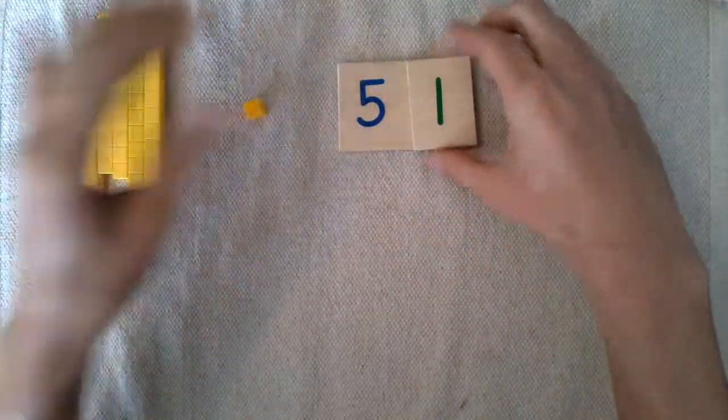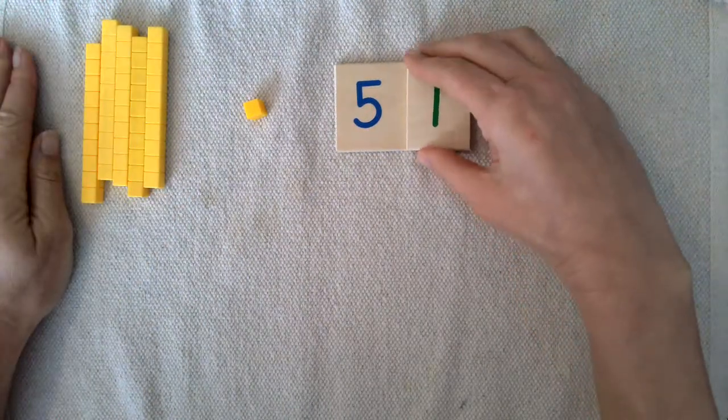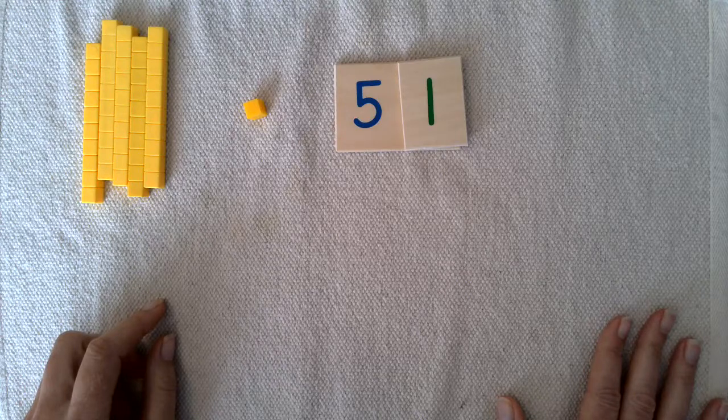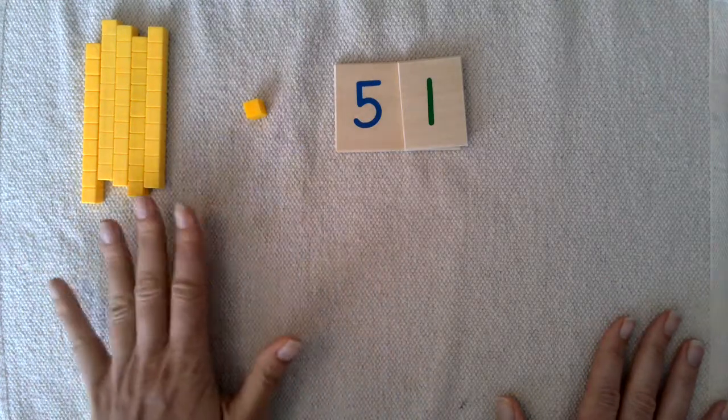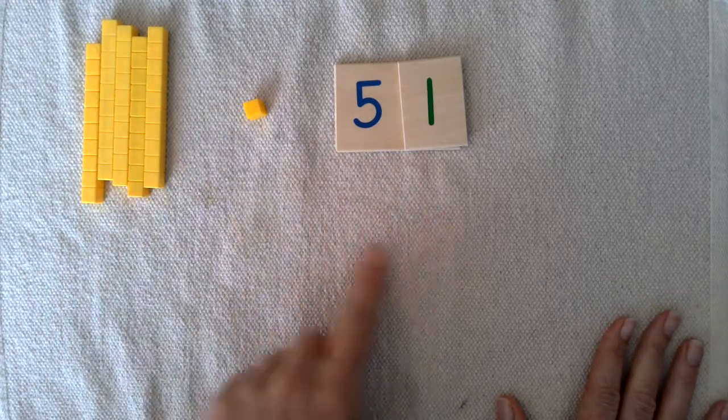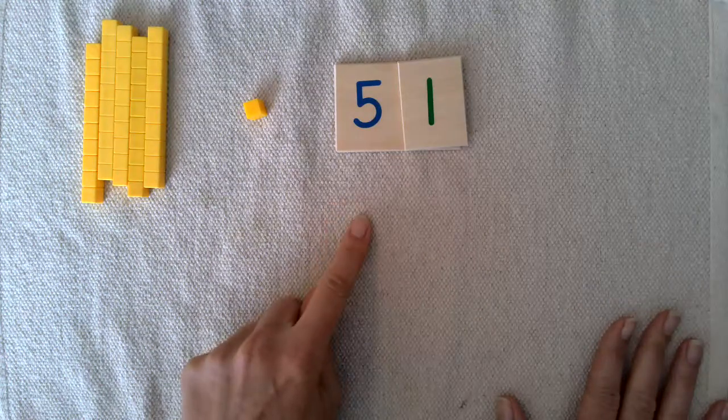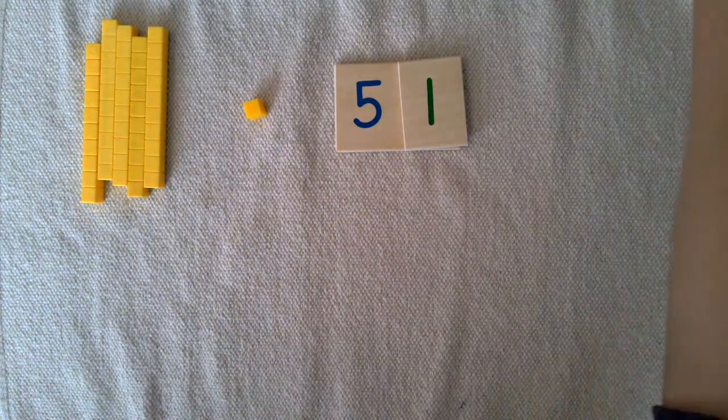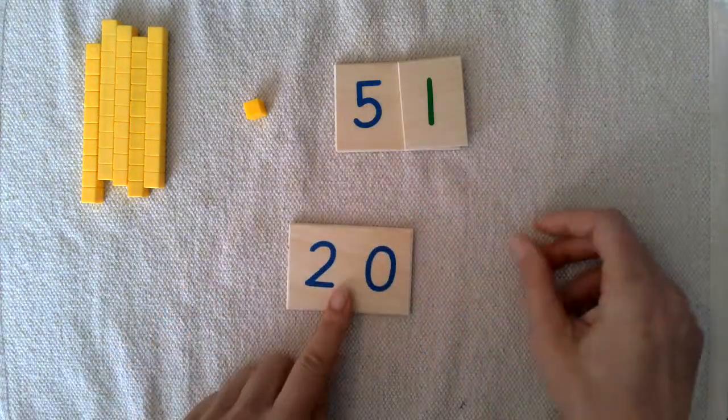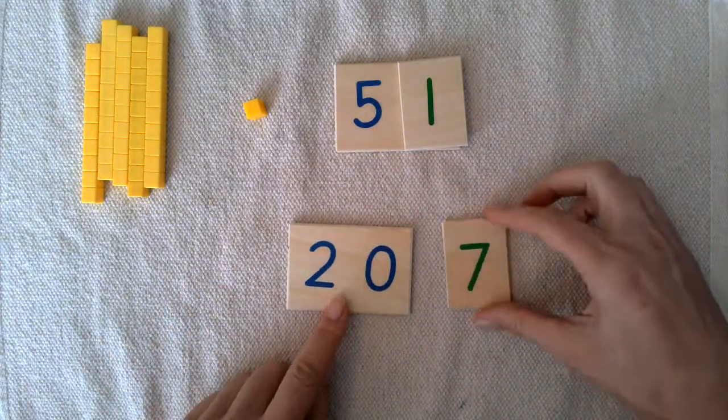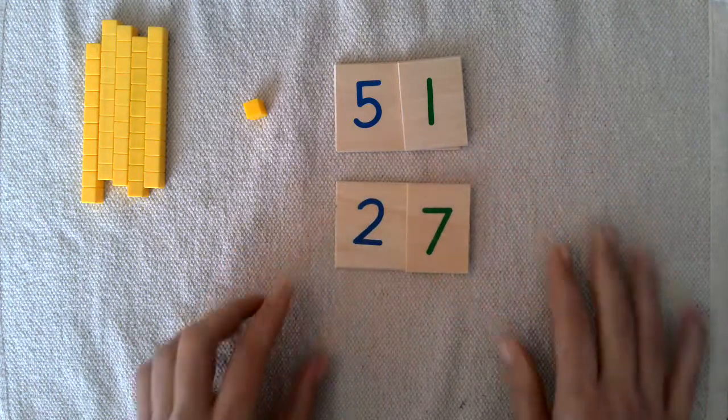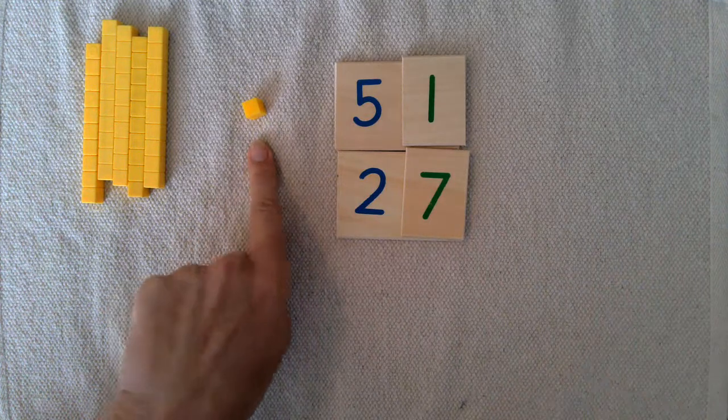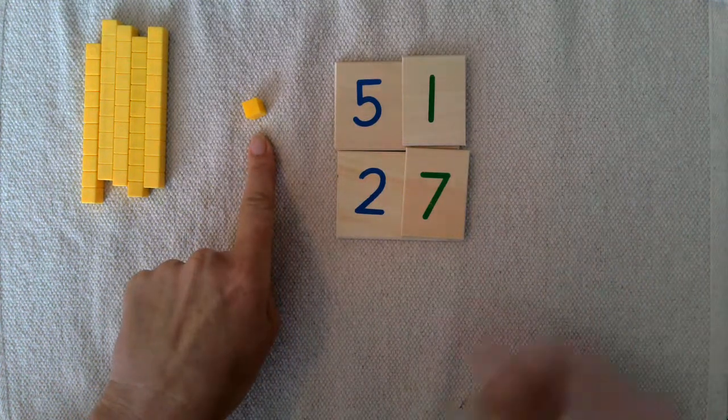Now subtraction means taking away, so we are going to take away an amount. Let's build that number here that we're going to take away, and we're going to take away 27, so that's two tens and seven ones. Now when we subtract we start with the ones place.